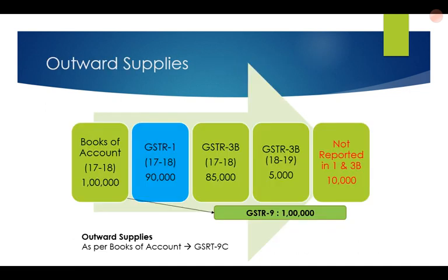So the amount shown in GSTR9 — Rs 1,00,000 — is equivalent to the amount in the books of account. Therefore, the outward supplies as per the books of account is the figure which should be given in GSTR9. Figures will be reported either in GSTR3B of 2017-18, or in GSTR3B of 2018-19, or if not reported at all, the amount still has to be shown and liability discharged through DRC03.